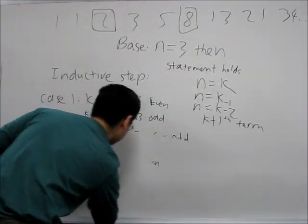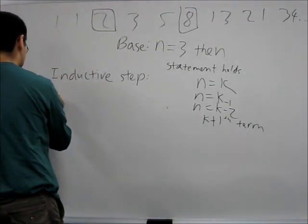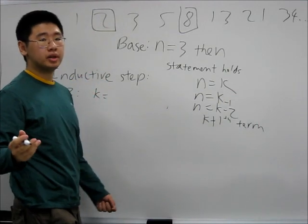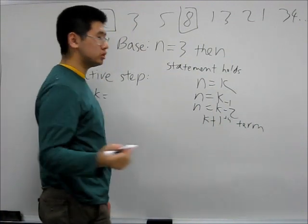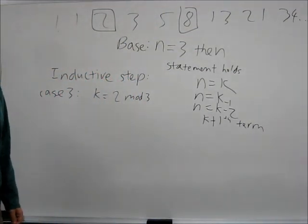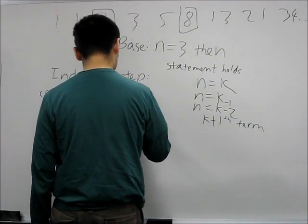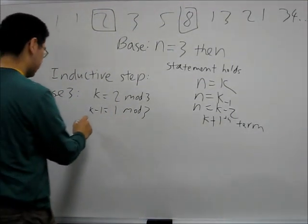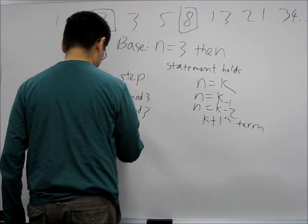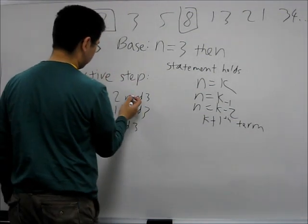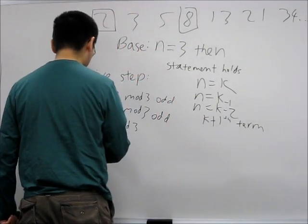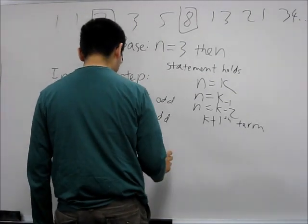And for our last case, if k divided by 3 has a remainder of 2, then k minus 1 will have a remainder of 1. So k plus 1 would be divisible by 3. Since k is not divisible by 3, we assume it's odd. And since k minus 1 is also not divisible by 3, we assume it's odd as well. Since k plus 1 is the sum of an odd plus an odd, then k plus 1 must be even.